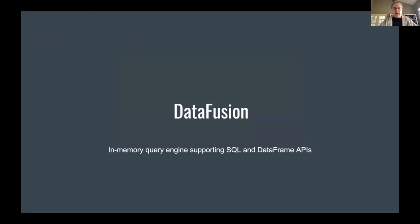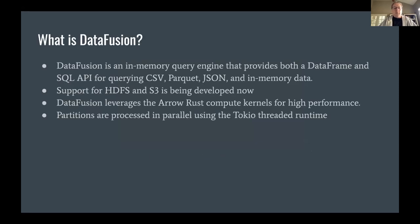That's a whirlwind tour of Arrow, which is the building block for the memory format in DataFusion. DataFusion is an in-memory query engine with SQL and DataFrame APIs — this should look fairly familiar if you're used to things like Pandas or Apache Spark. Currently it supports reading CSV, Parquet, and JSON, as well as in-memory data. It's extensible, so if you want to provide your own formats, there's a mechanism to do that.